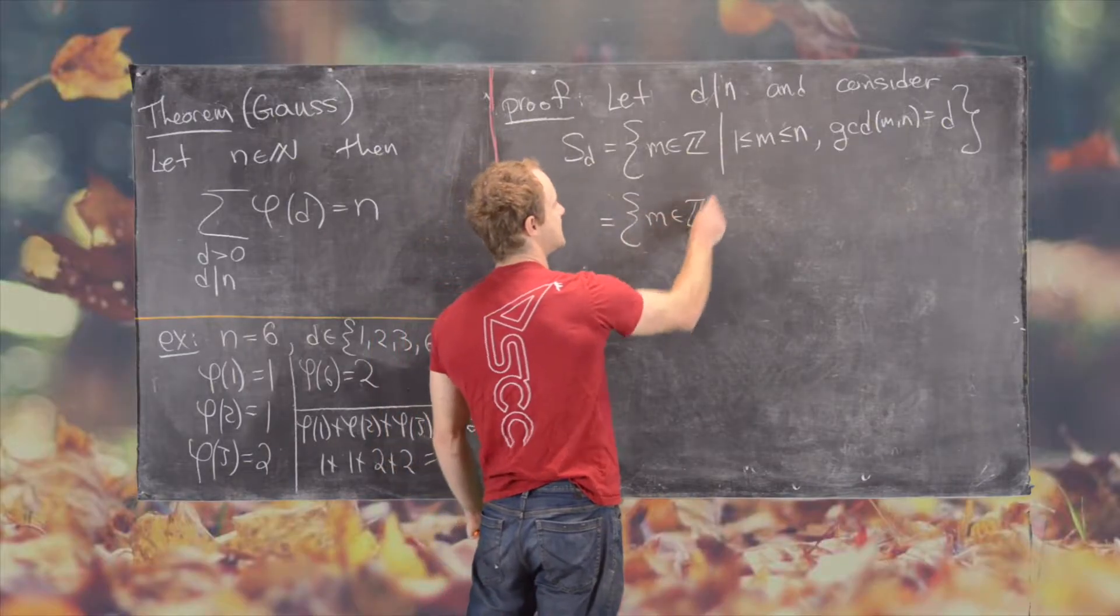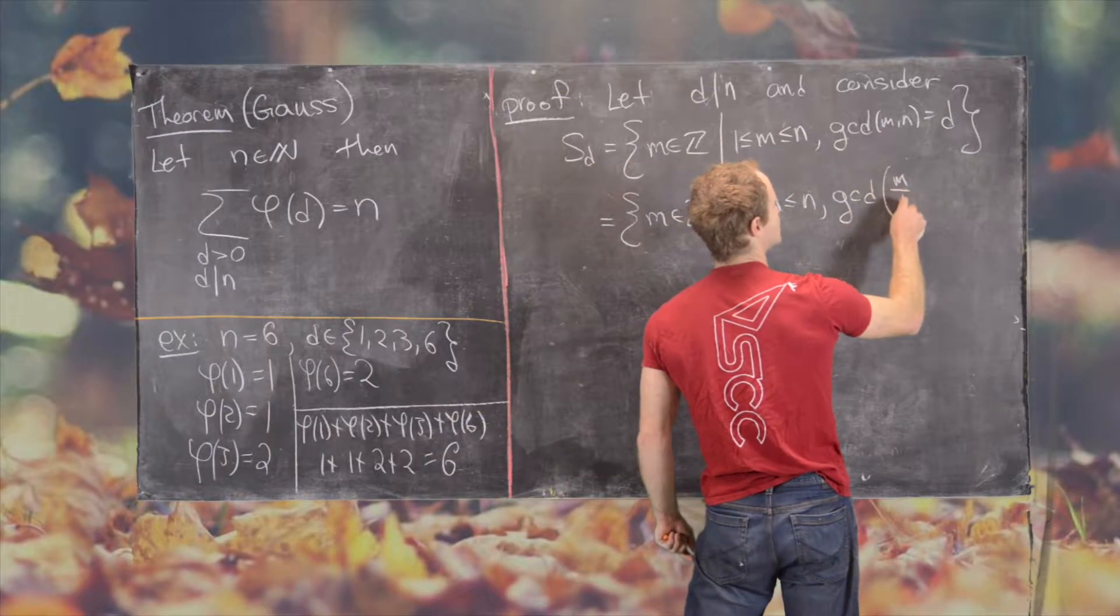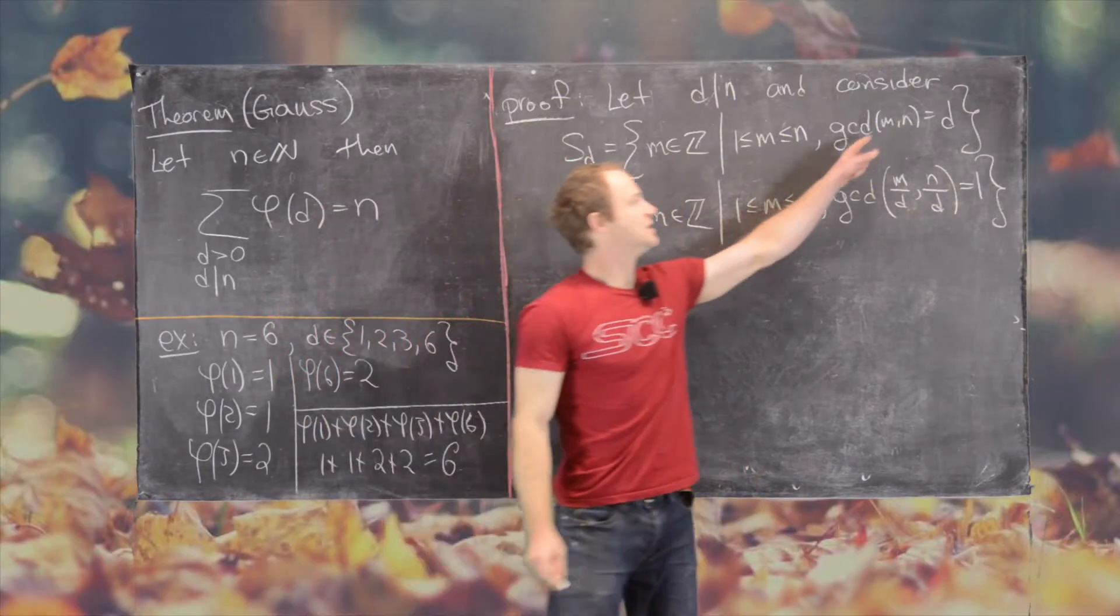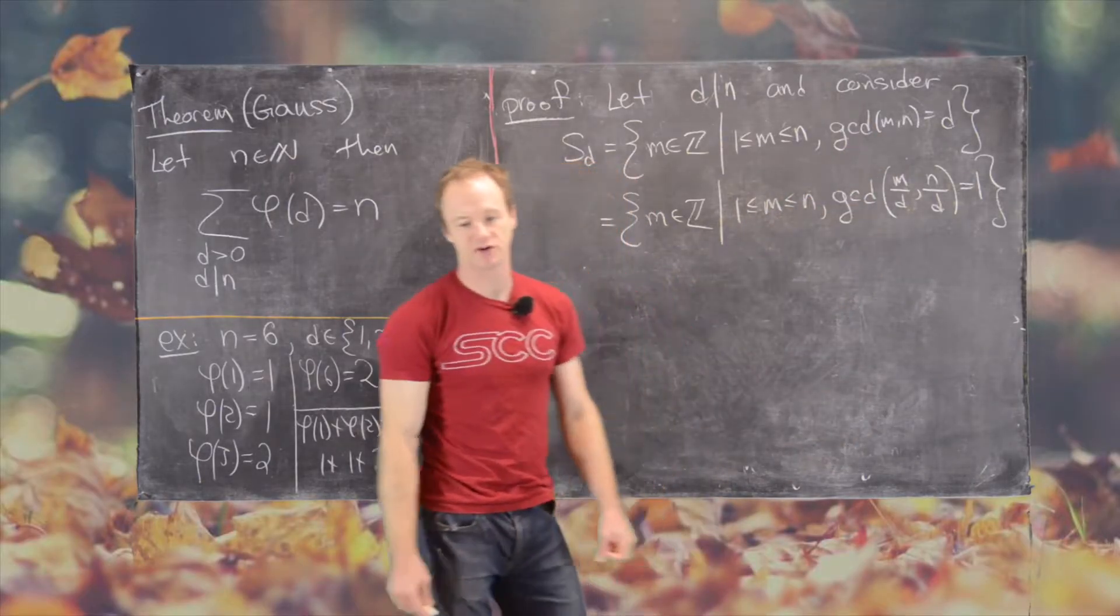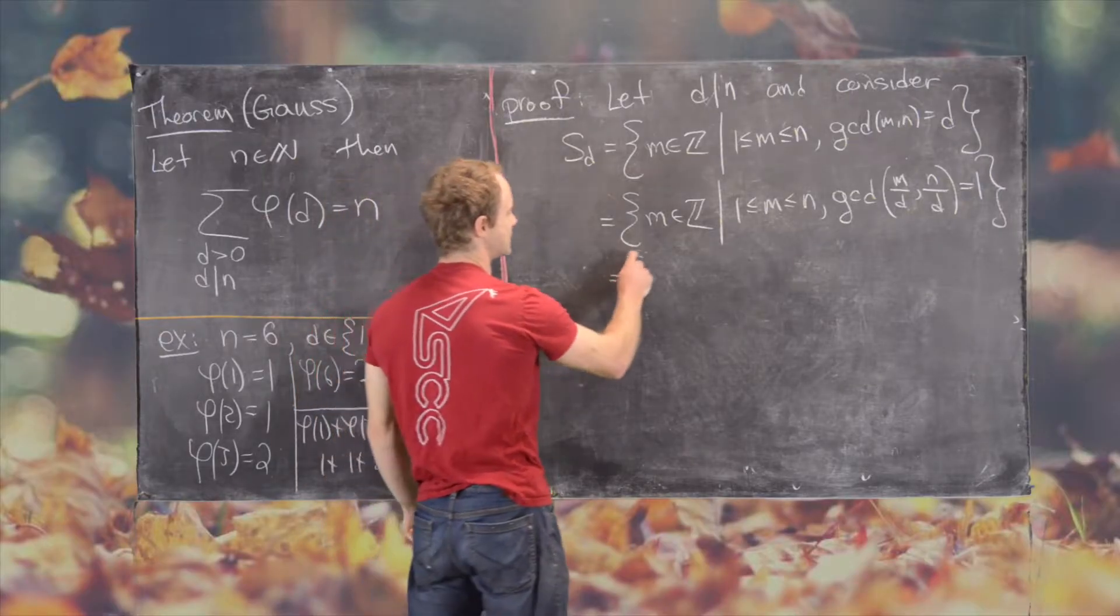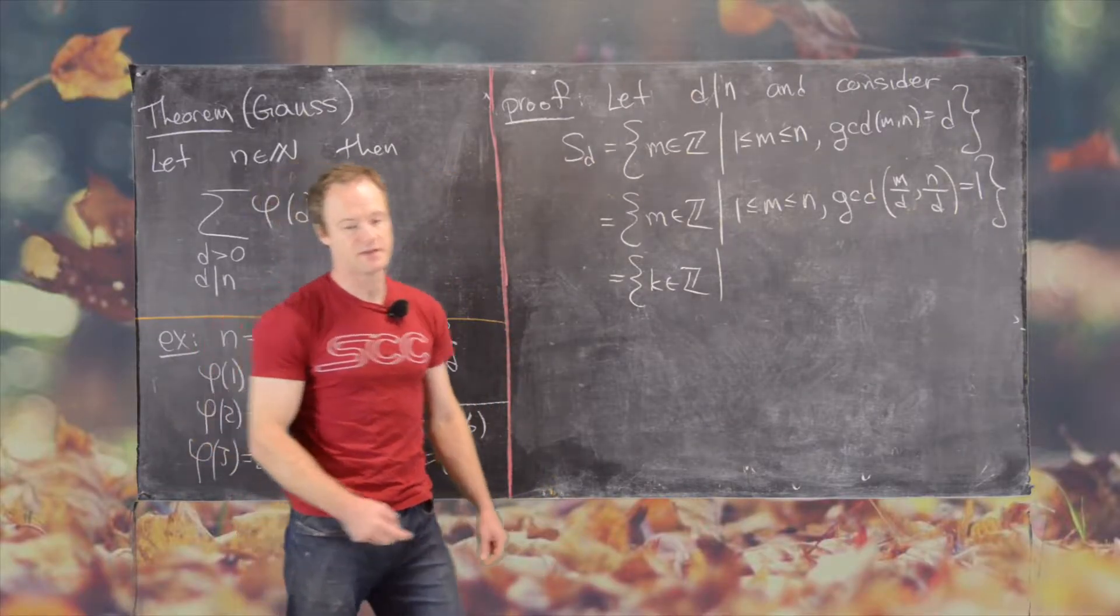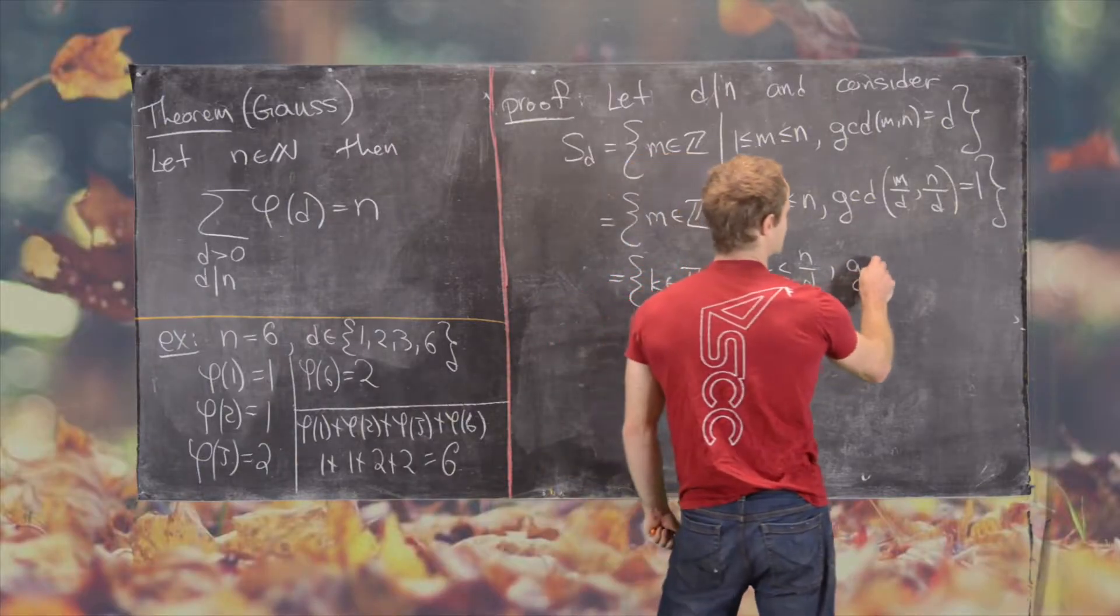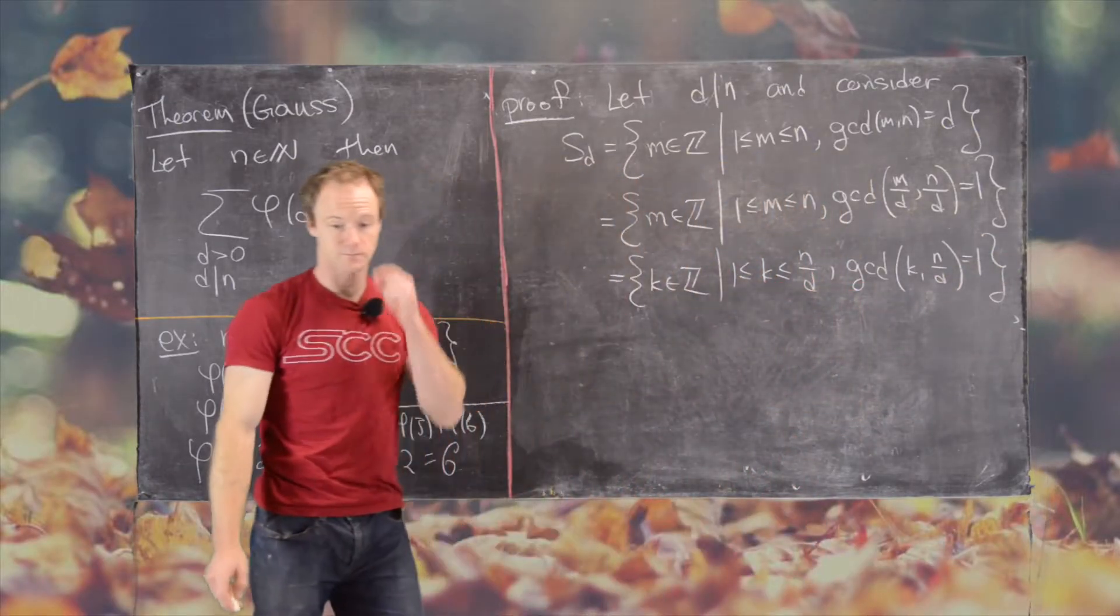The first way that we're going to rewrite this set is as follows. So this is all M in Z such that M is between 1 and n, and the GCD of M over D and n over D equals 1. So if two natural numbers have a GCD of D, then you can divide D out of each of them and you're left with two natural numbers that have a GCD of 1. But now we can rewrite this as all K in the integers, where K goes from 1 to n over D, and the GCD of K with n over D equals 1.